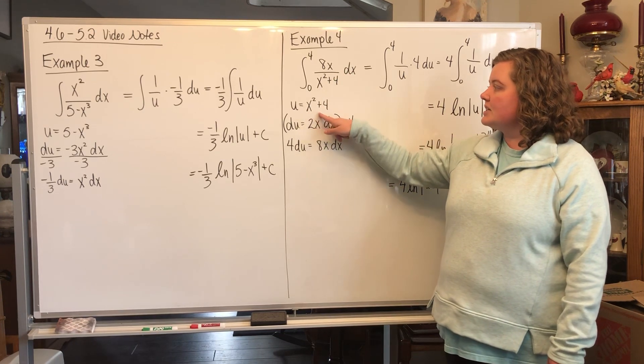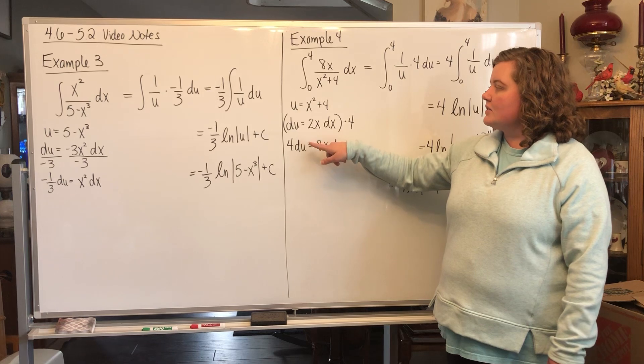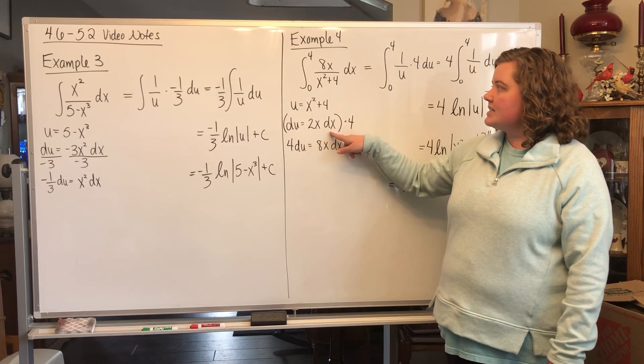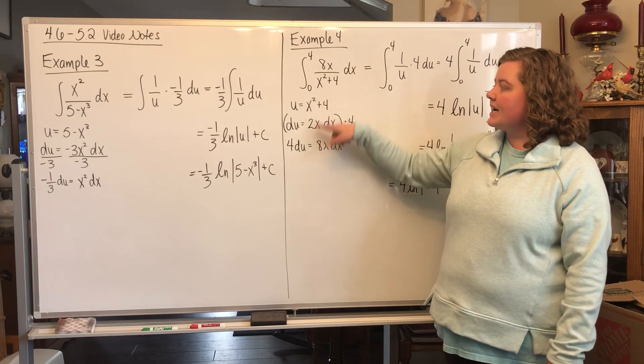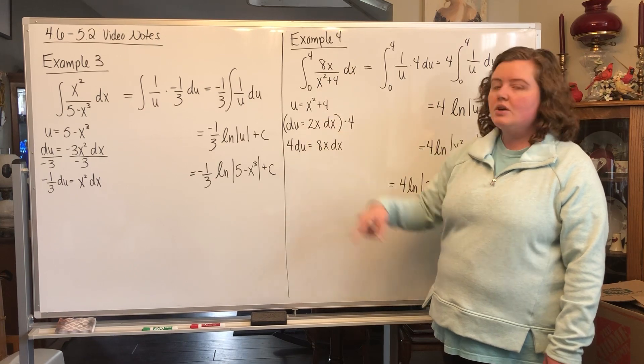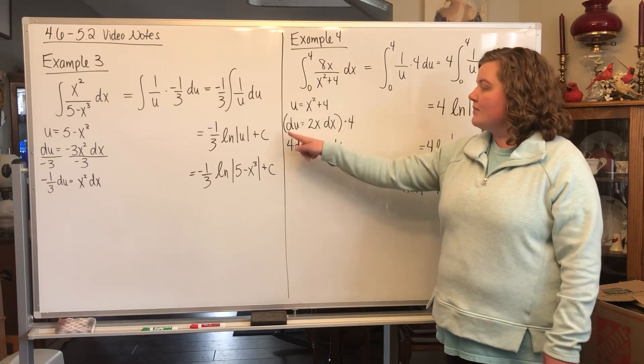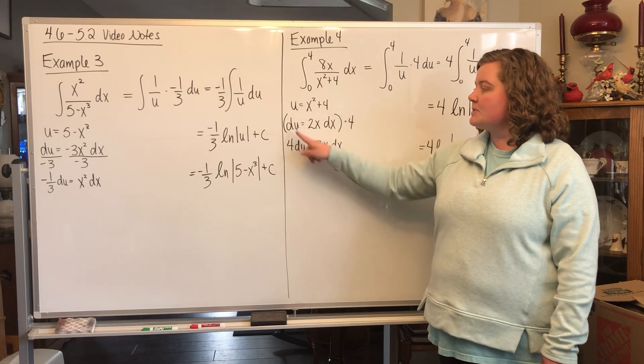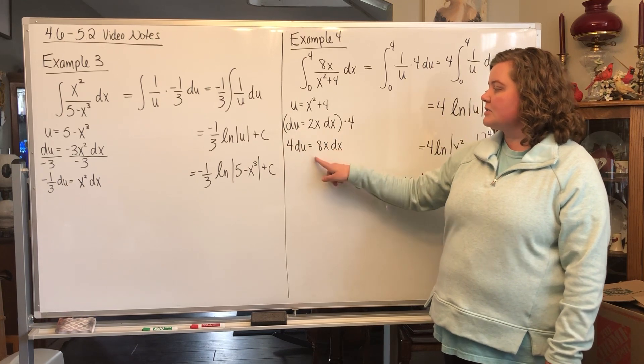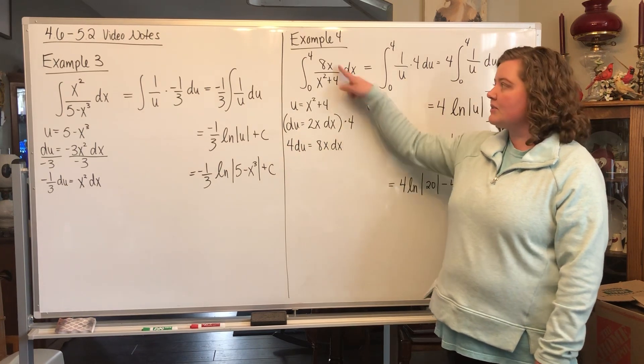Our u is x squared plus 4, so du would be 2x dx. We have the x, but the problem is this is 8 and this is 2. What we do is multiply everything by 4. This becomes 4du and then this is 8x dx. Now we can replace it.